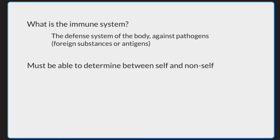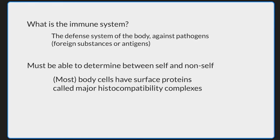Self-molecules would be the components of the organism's body and these would be distinguished from foreign substances by the immune system. The way the body does this is quite complicated. Almost all body cells have surface proteins referred to as major histocompatibility complexes, or MHCs. These are proteins that hold other proteins, and this is one way that cells can communicate with immune cells.